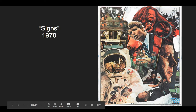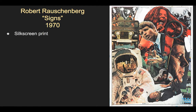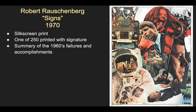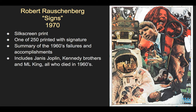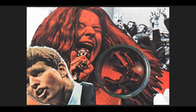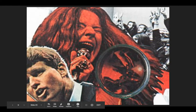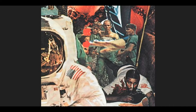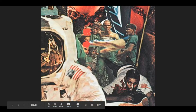It's interesting — a whole combination of images. It's a silk screen print, with 250 made, so he could sell each for a few hundred dollars and make a lot of money. It's a summary of 1960s failures — people dying in the Vietnam War — and accomplishments, like landing on the moon and progress in the civil rights movement. Janis Joplin, the Kennedy brothers, and Martin Luther King all died in the 60s. He said about this piece it was conceived to remind us of love, terror, violence of the last ten years, danger, lies, and forgetting. Here's a detail — it almost looks like some type of lens focused on Robert Kennedy, Janis Joplin, and war protesters, with soldiers and a civil rights marcher beaten up.